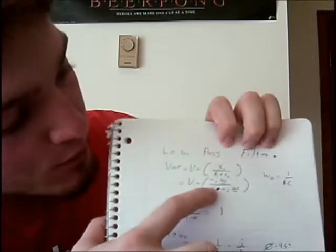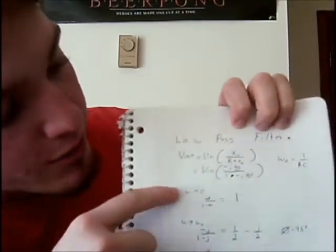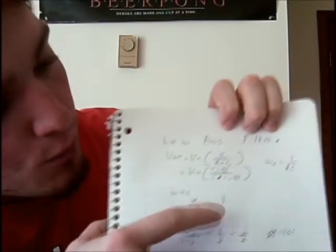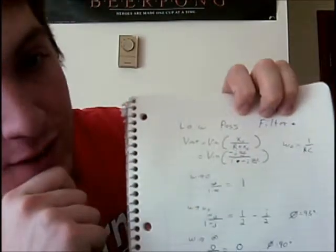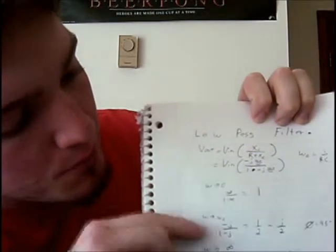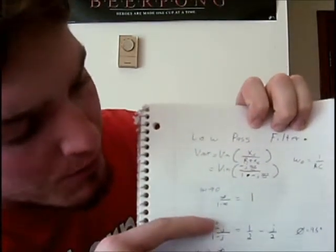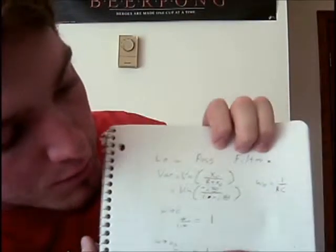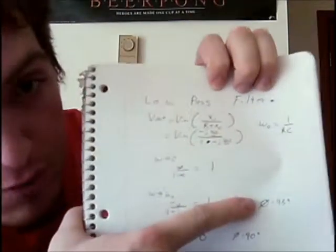So we simplified this equation down and then we started out with our omega approaching zero which we got one which would have a phase change of zero. And then as omega approached omega naught we got one half minus j over two which would have a phase of 45 degrees.